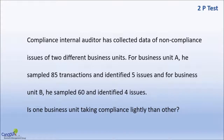We will take a similar example as we took for the 1P test. This internal auditor has collected compliance issues for two different teams or two different business units. For business unit A, he has collected 85 samples and found 5 issues. For business unit B, he has collected 60 samples and found 4 issues.